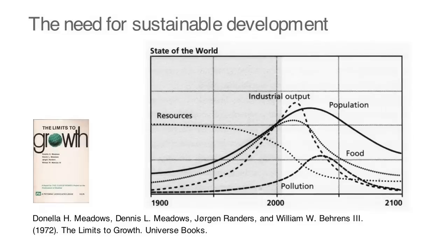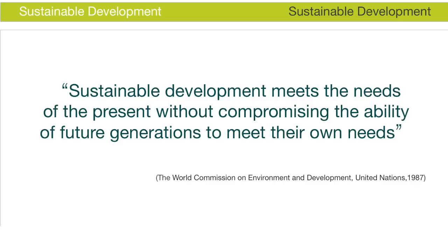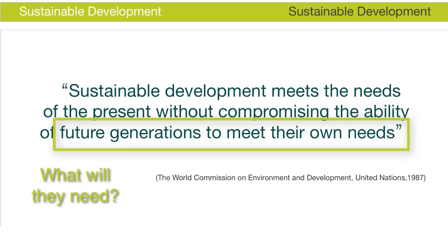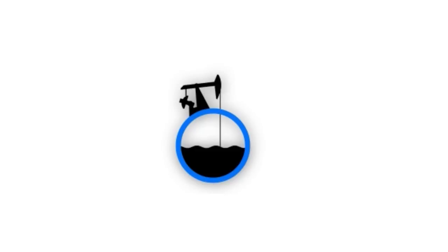The most widely cited definition of sustainable development comes from the United Nations 1987 Brundtland Report. This definition leads to many questions, such as what will be needed by future generations? This seems impossible to answer, but there are a few things we do know. The fact that we are using resources faster than the rate at which they're being regenerated will guarantee that they won't be available for future generations.